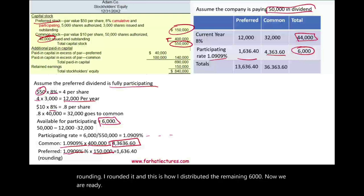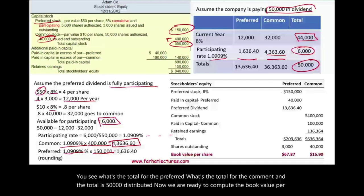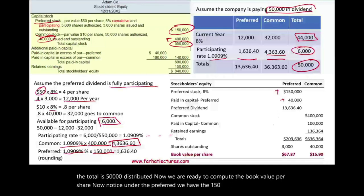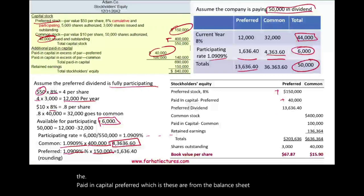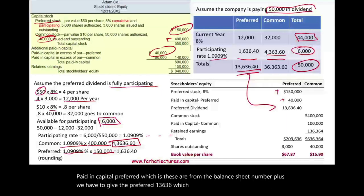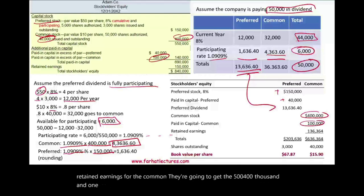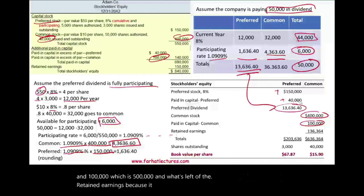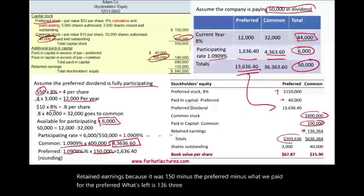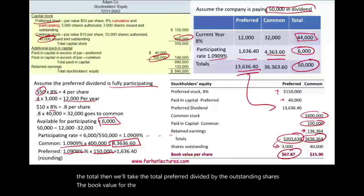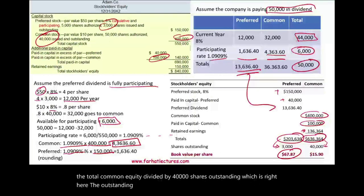Now we are ready to compute the book value per share. Under the preferred, we have $150,000 plus paid-in capital, plus $13,636 coming out of retained earnings. For the common, they get $400,000 plus $100,000 equals $500,000, and what's left of retained earnings is $136,364. Taking total preferred divided by outstanding shares, the book value for the preferred is $67.87. Taking total common equity divided by 40,000 shares outstanding gives $15.90 per share for the common stock.